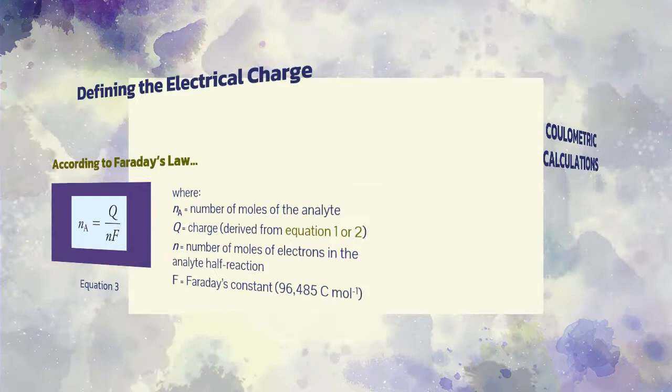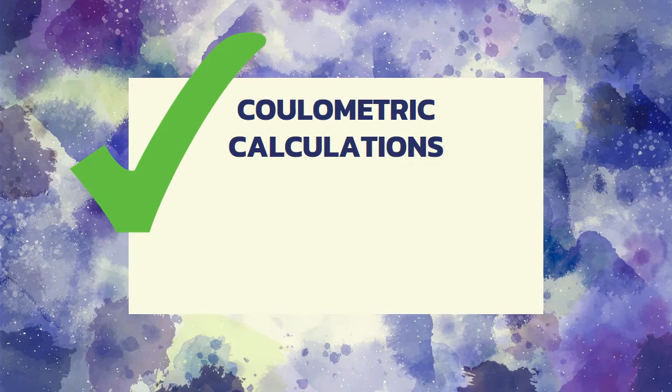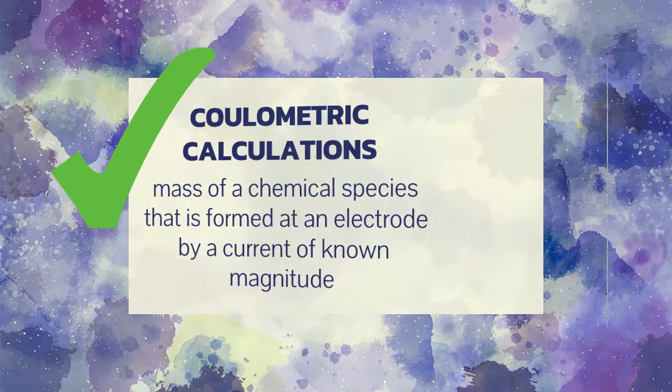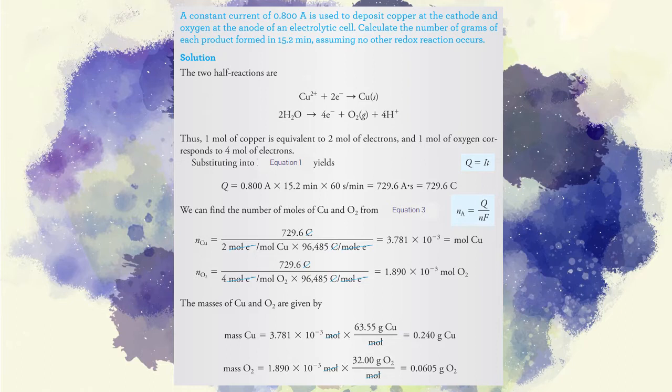Having these definitions, we are now able to calculate the mass of a chemical species that is formed at an electrode by a current of known magnitude. This is the core principle of coulometric methods of analysis. Here is a sample problem for you to apply the working equations involved in coulometry. Feel free to pause this video to practice your skills.